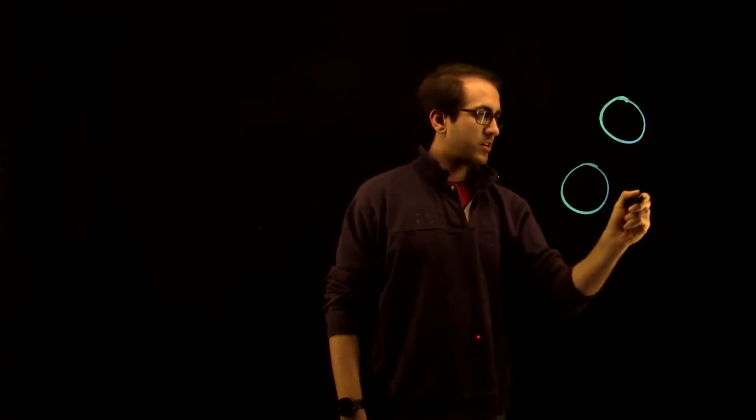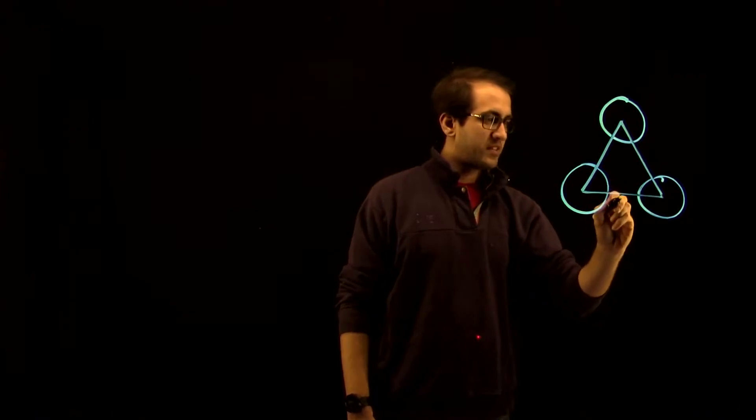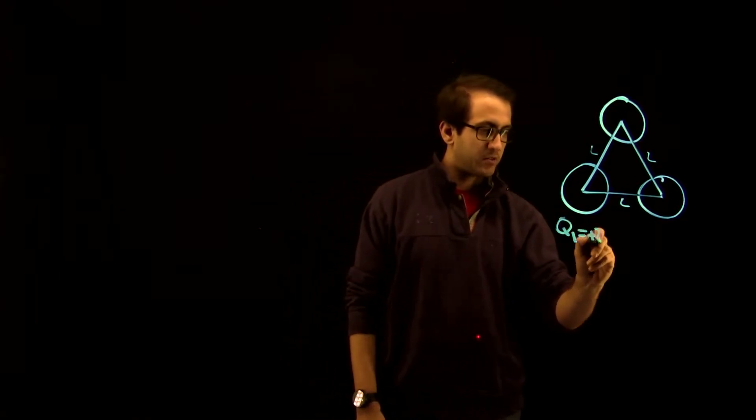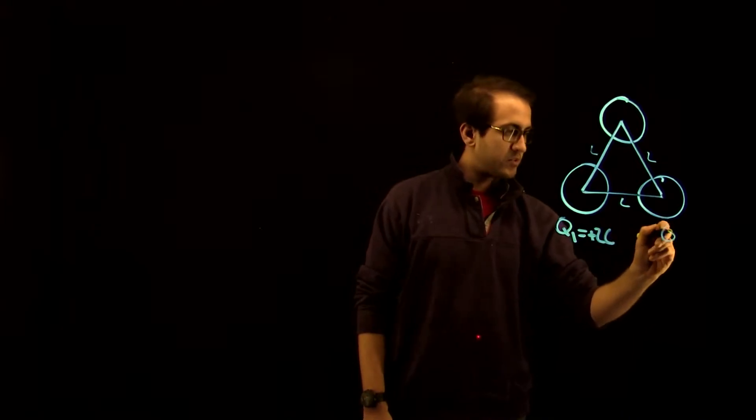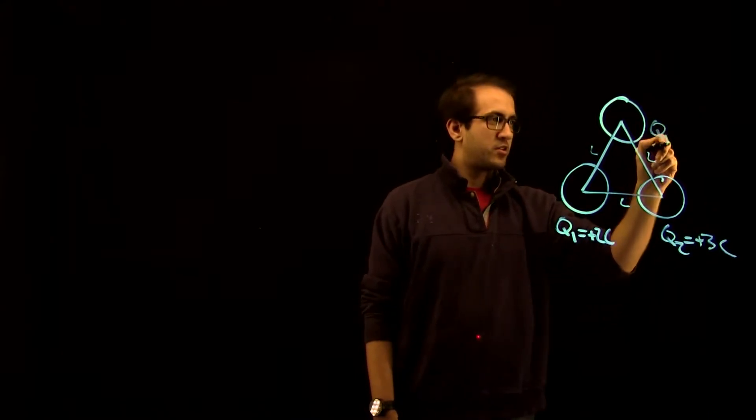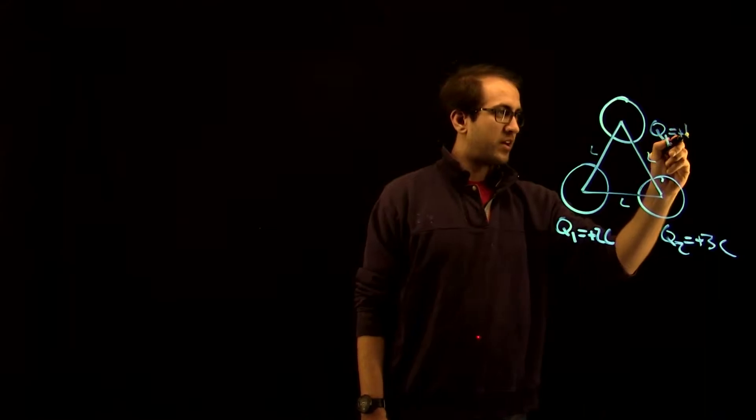So today we're going to be going back and looking at a system that we were considering in class. This system was three charges arranged into an equilateral triangle. So here I'm going to draw that out. One charge, two charge, three charge. Each one of these has a side length L because it's an equilateral triangle. And we'll call this charge Q1, which has a value of plus two nanocoulombs. We'll call this one Q2, which has a value of plus three nanocoulombs. And we call this one Q3, which has a value of plus one nanocoulombs.